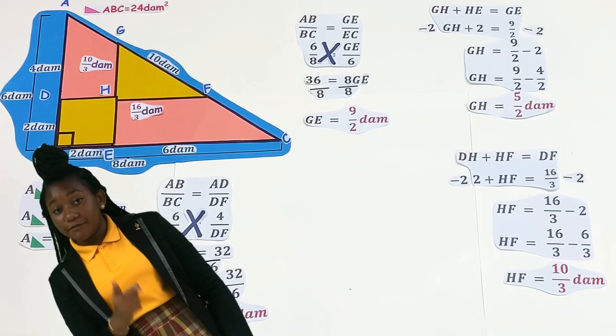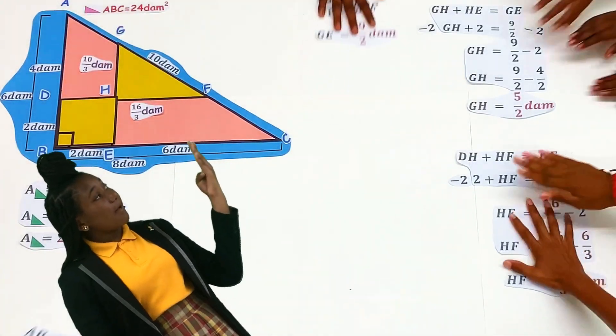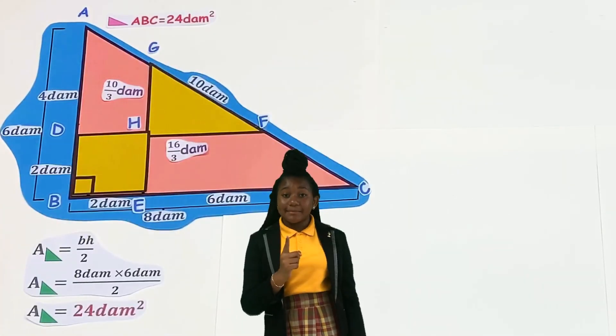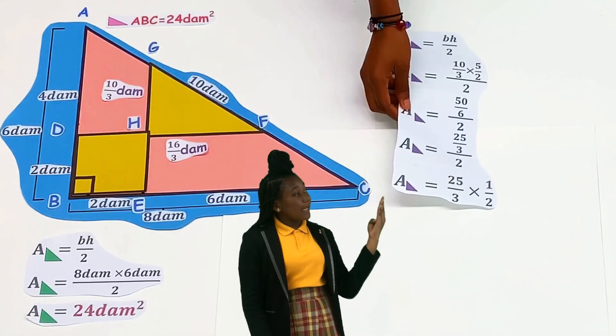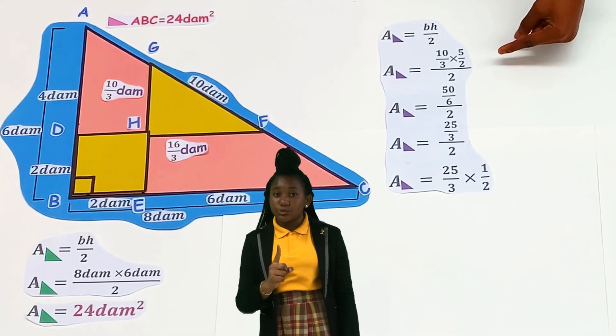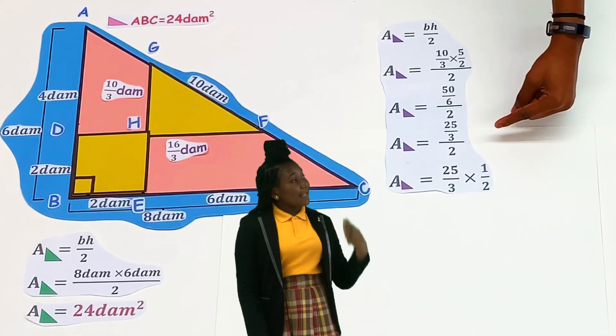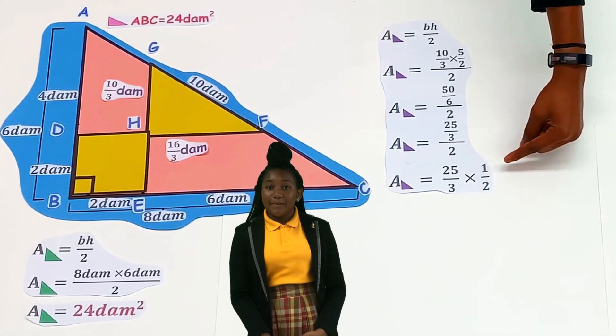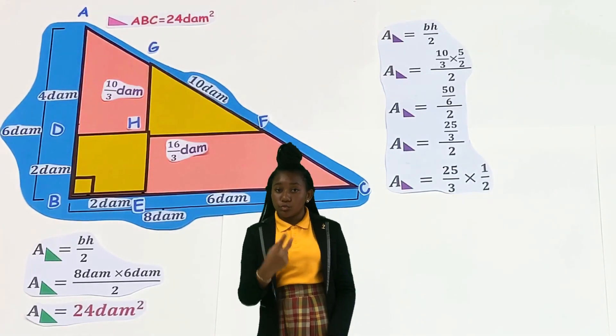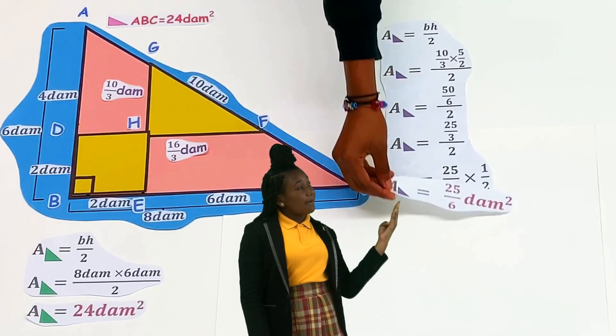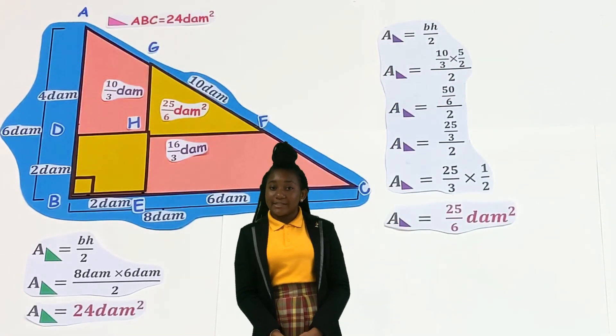Great! We can use the value of GH and HF to find the area of the small triangle GHF. Base times height divided by 2 or the product of 10 over 3 and 5 over 2 divided by 2 results in 50 over 6, simplified to 25 over 3. To get the quotient of 25 over 3, multiply 25 to the reciprocal of 2 which is 1 half. The area of the small triangle is 25 over 6 decimeters squared.